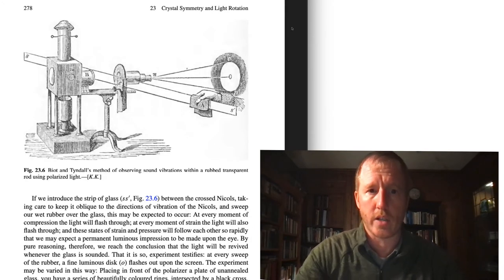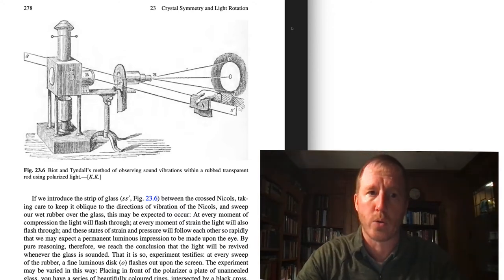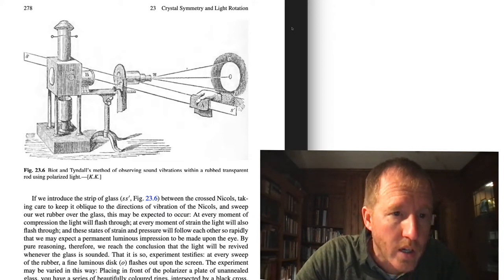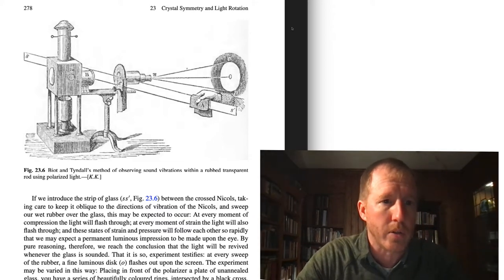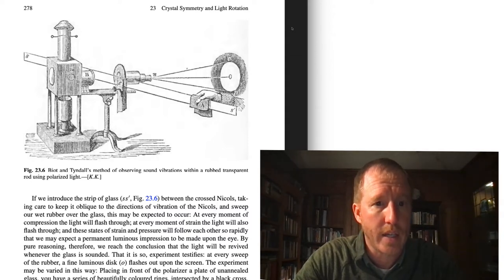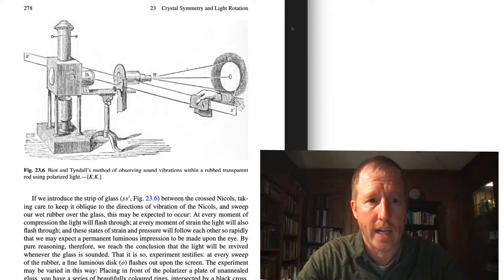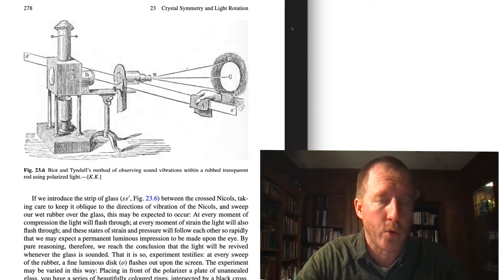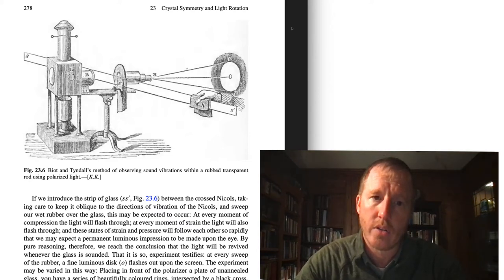So that's one thing that he does. He does another thing that's quite interesting, which this would be a really fun experiment to do in the laboratory. This is depicted in figure 23.6, where he takes a source of light, and there's this big box that's a source of light. And then he has some polarizing filter at position B. So you have polarized light striking this piece of glass that is denoted by S over to S prime. It's a thin sheet of glass. And then another polarizing filter at location, I believe it's N. So you have cross polarizers. And then what he does is he rubs a piece of damp wool across the glass.